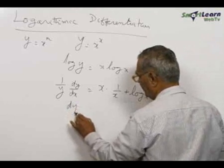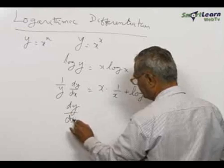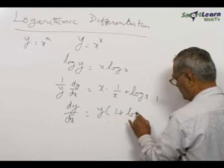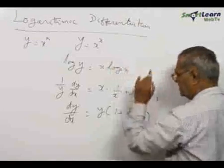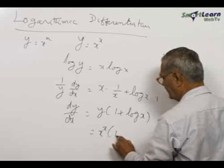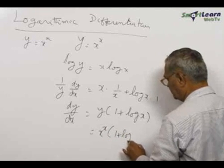So dy by dx is nothing but y into 1 plus log x. But you know that y is nothing but x to the power of x, so this is equal to x to the power of x into 1 plus log x.